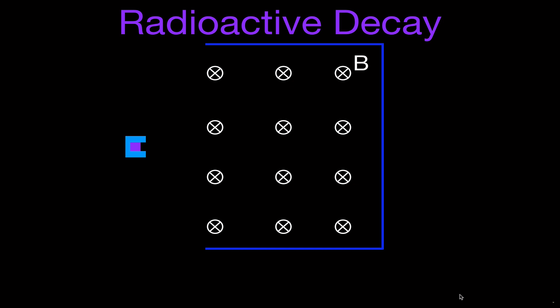So they took that radioactive sample — it's right here, this purple sample — they put it in a sample hole, they pointed it towards a magnetic field, and the radiation that would come out, some of the particles would be deflected down and to the right by that magnetic field, some would be deflected up or to the left, and some would not be deflected at all and would go straight through.